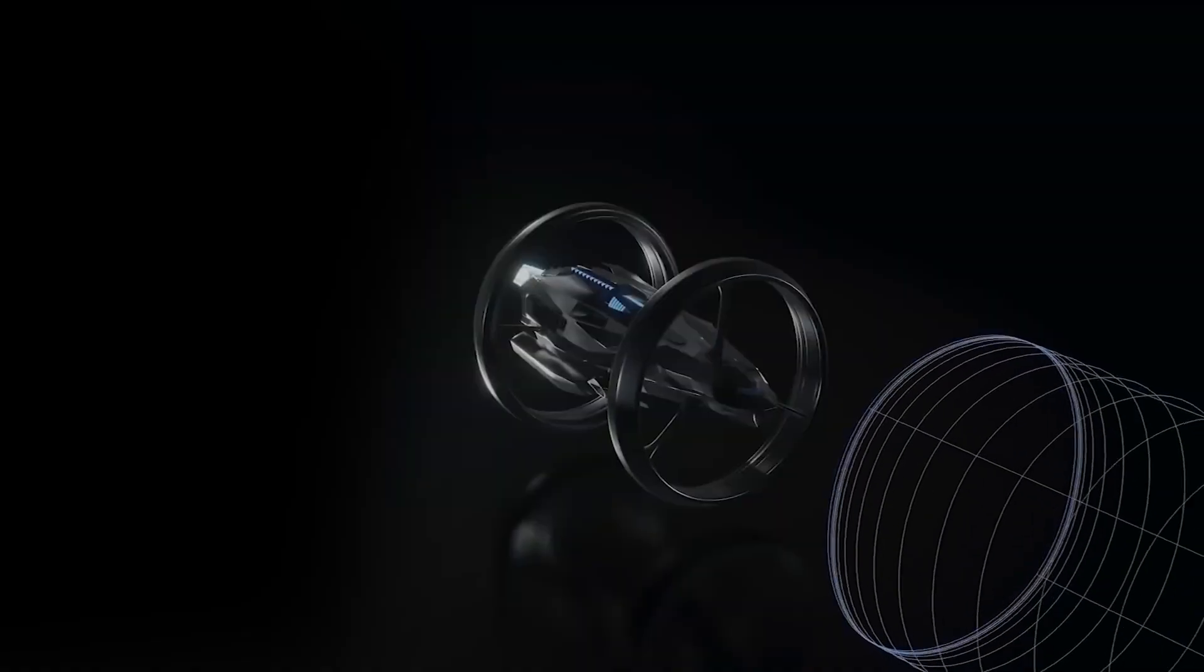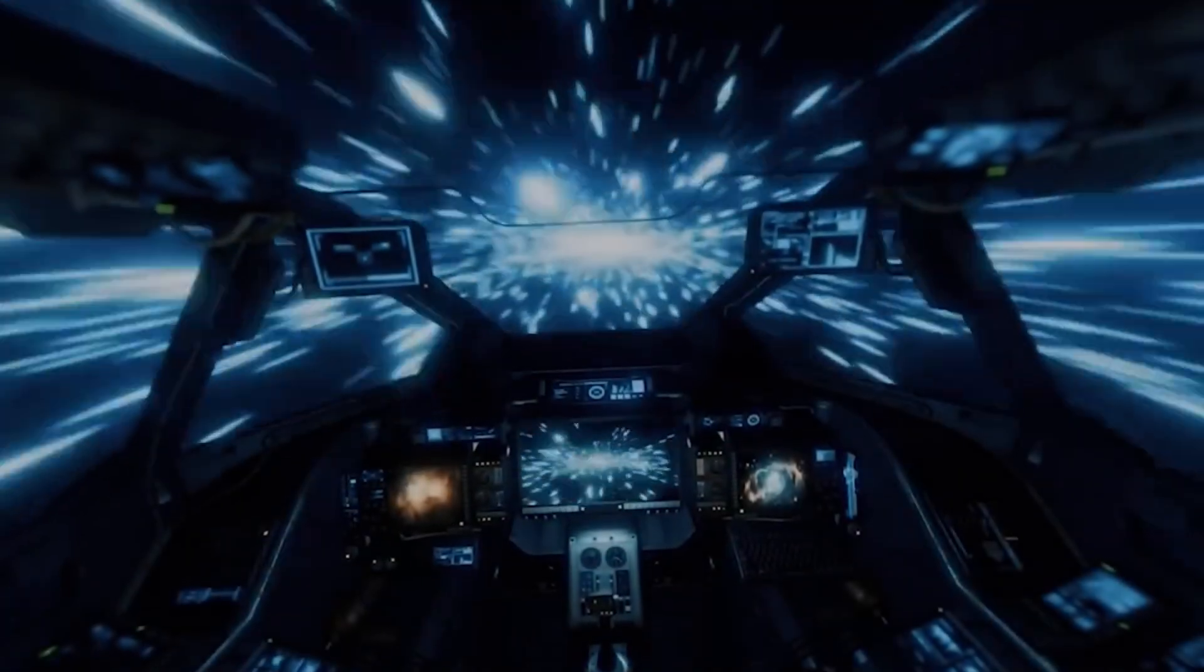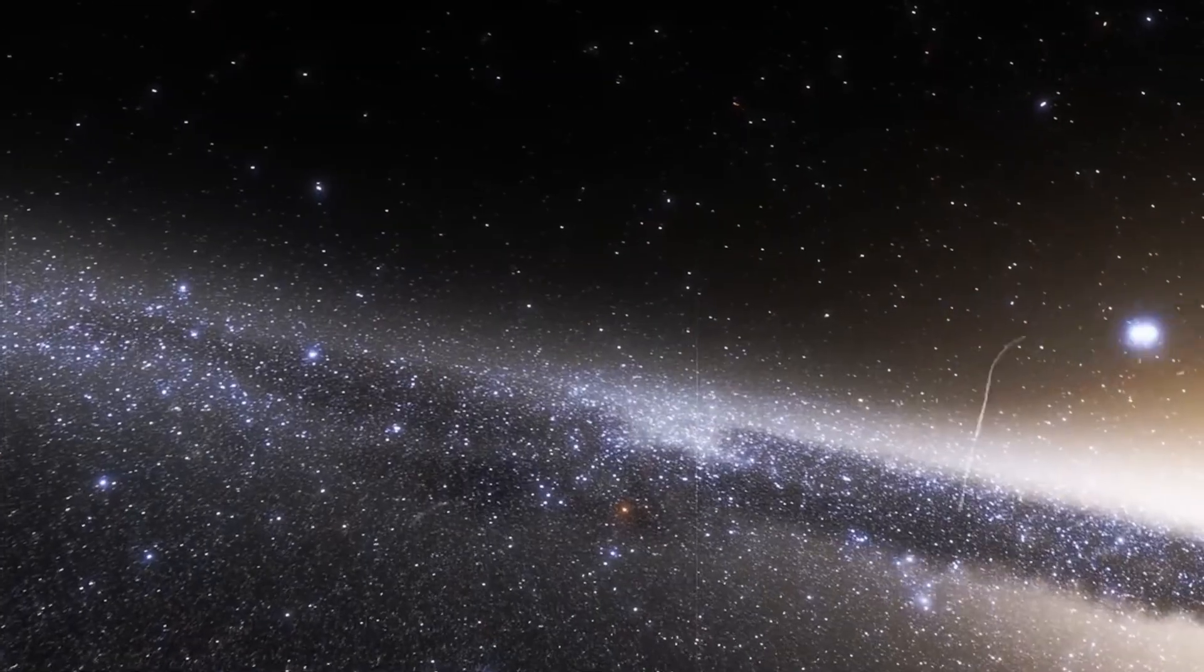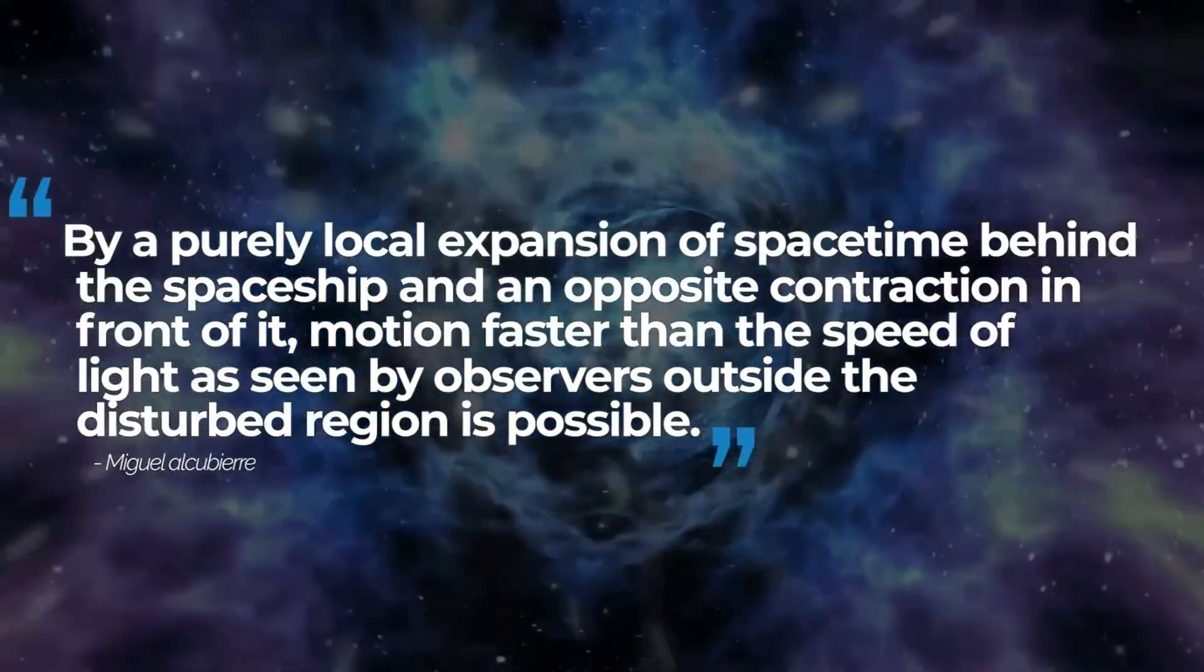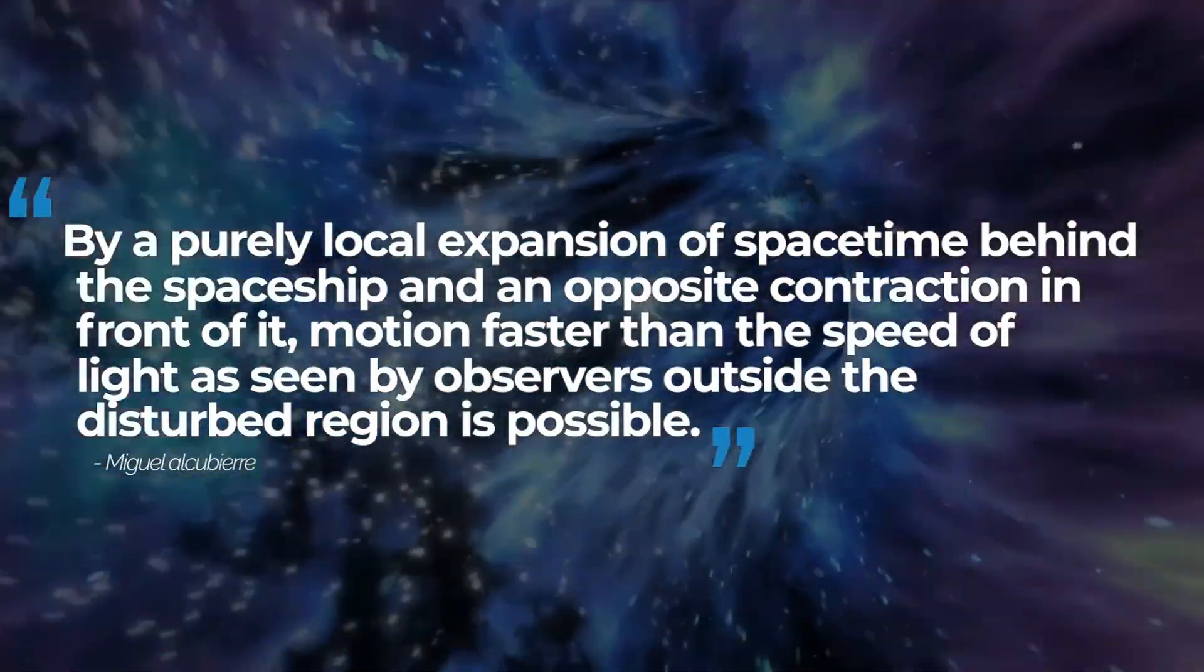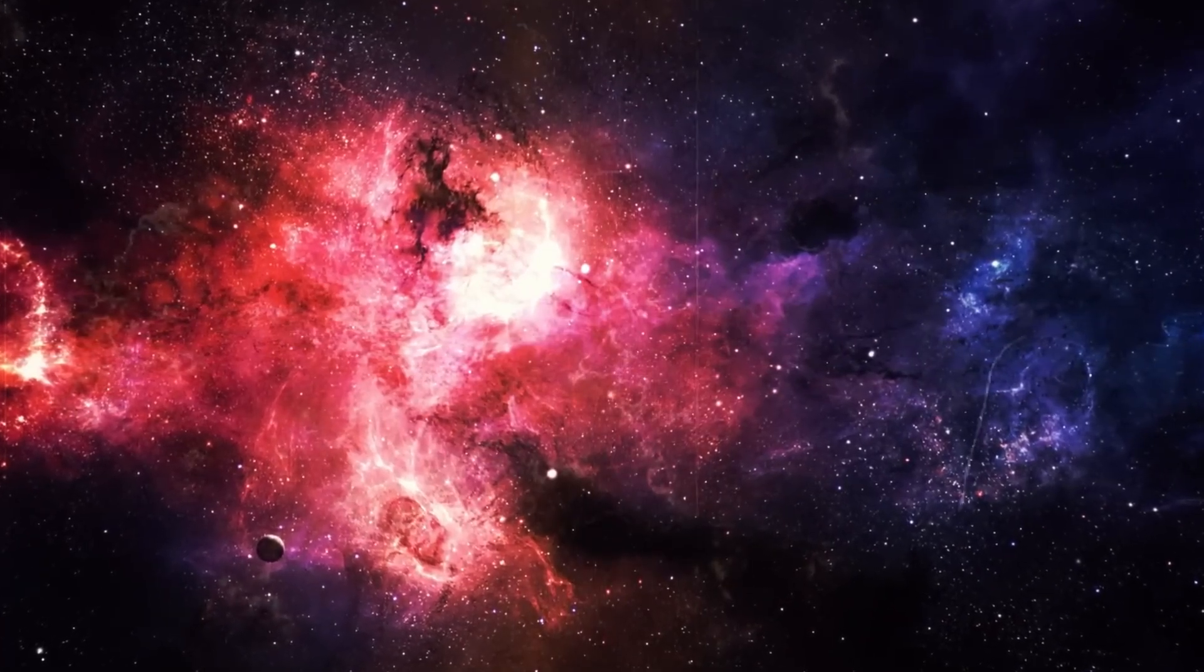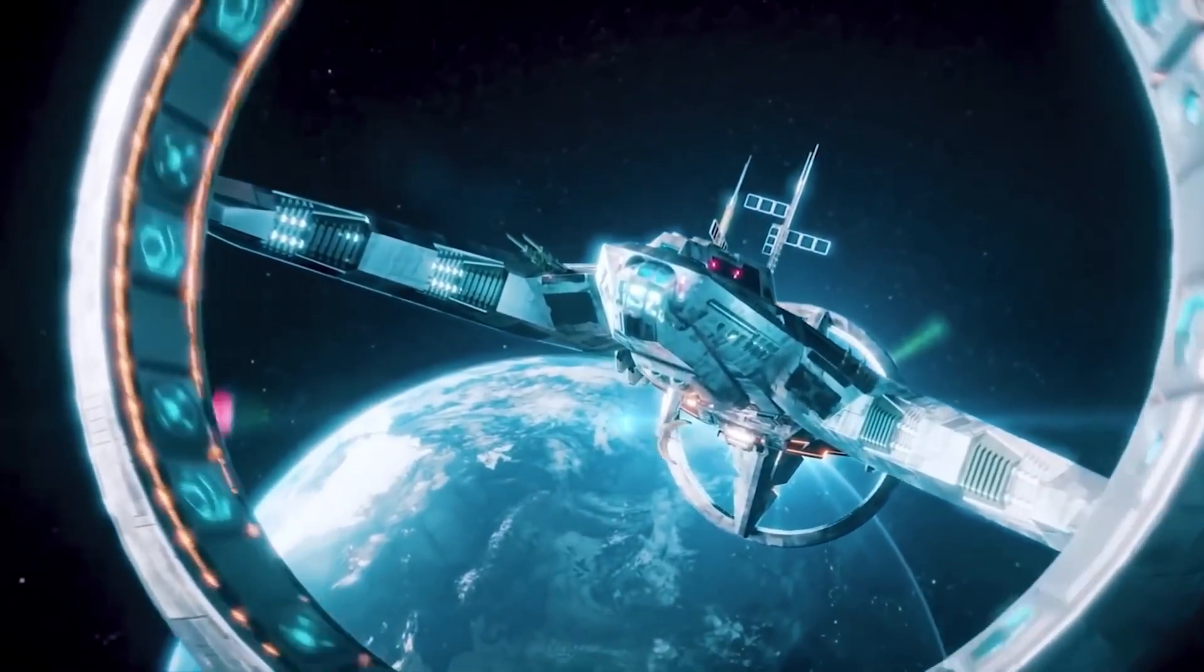Some of these concepts are rooted in real observed physics, like time dilation and length contraction. They used to sound like sci-fi babble, but now we've measured them, built entire satellite systems that rely on them. Still, traveling faster than light raises all kinds of brain-breaking questions, like the causality paradox. What if your spaceship arrived before it leaves? Could you prevent your own launch? It's the kind of stuff that keeps physicists awake at night, scribbling equations and questioning reality itself. But instead of giving up, scientists are getting creative.